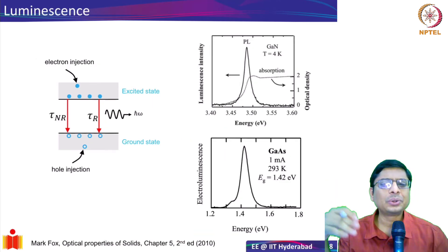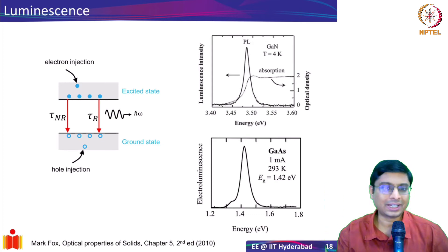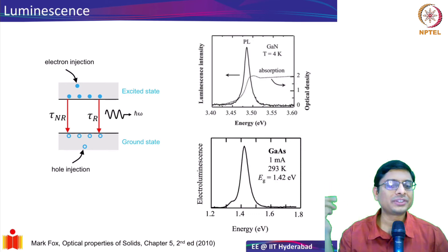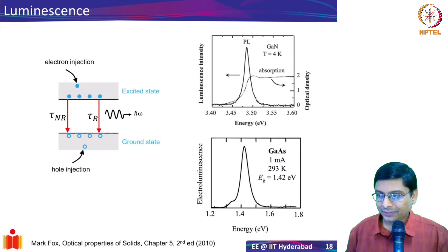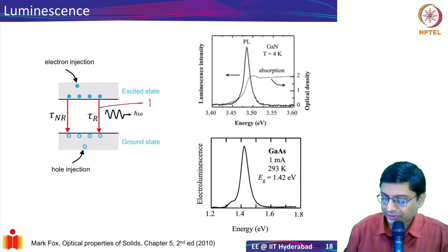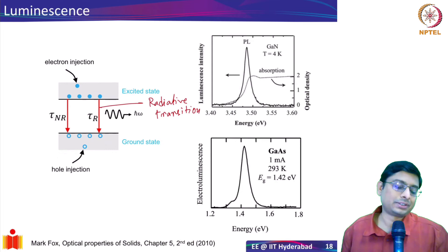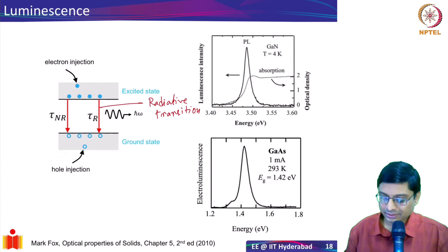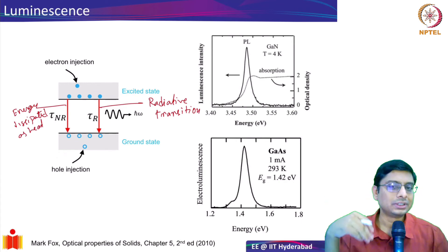Once you have gain, you have luminescence — emission of photons. If you inject electrons and holes into the conduction and valence bands, they recombine and emit a photon. This is called a radiative transition. However, a semiconductor can also dissipate energy as heat — that is a non-radiative transition — and the two processes compete.